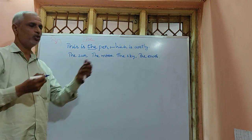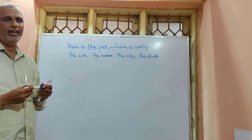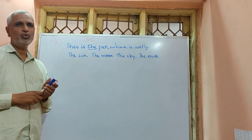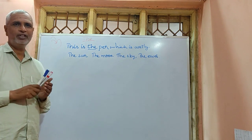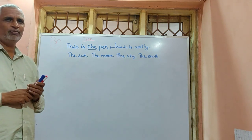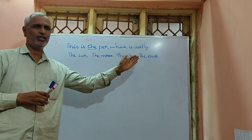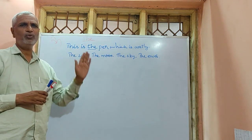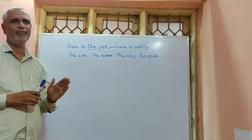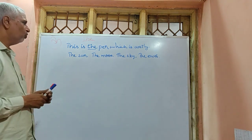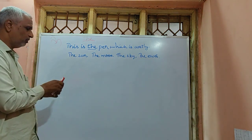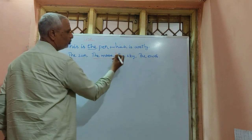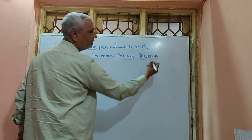Here we cannot use indefinite articles. The reason is very simple: they are only one of their kind in the universe. These are the unique things. So we say the sun, the moon, the sky, the earth.